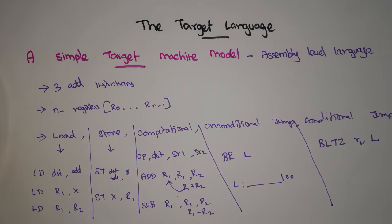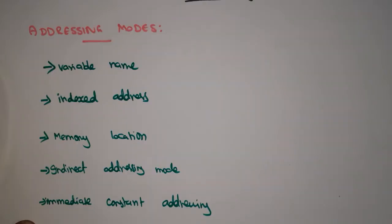These are all the instructions in the assembly-level language. We need to convert our intermediate representation into these instruction types. We'll now discuss the different types of addressing modes — how a variable can be called or stored in the assembly-level language.